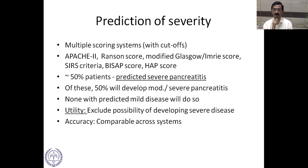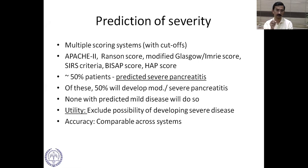There are multiple scoring systems for predicting severity, such as the Ranson score of more than three and APACHE II more than eight. About 50% will be predicted to have severe pancreatitis based on those cutoffs, but of these, only 50% will actually develop moderate or severe pancreatitis. The utility is mainly to exclude the possibility of severe disease, and accuracy is comparable across the various systems.